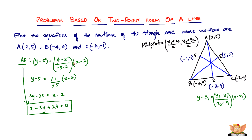This is exactly how you are supposed to find the other medians of the triangle, such as BE and CF. Please use the same formula, name one point x1, y1 and the other x2, y2, substitute, and find the equations. The equations of medians BE and CF are found to be as follows. Let us find the equation of median BE.